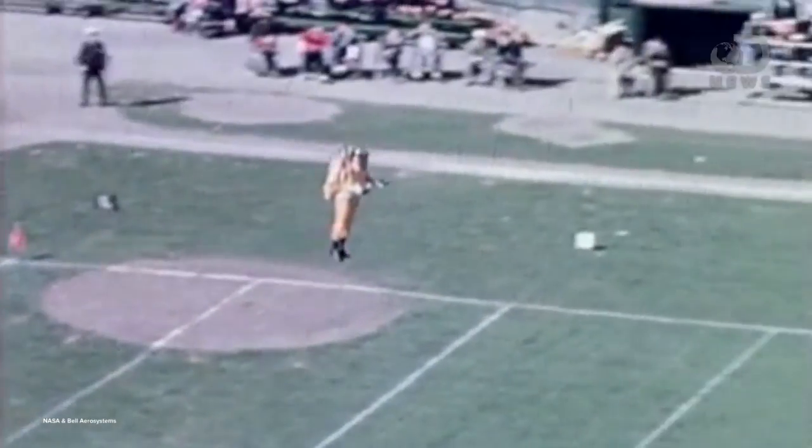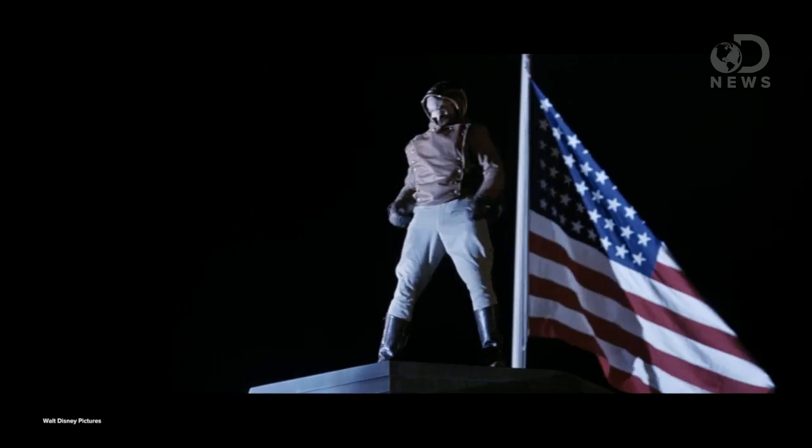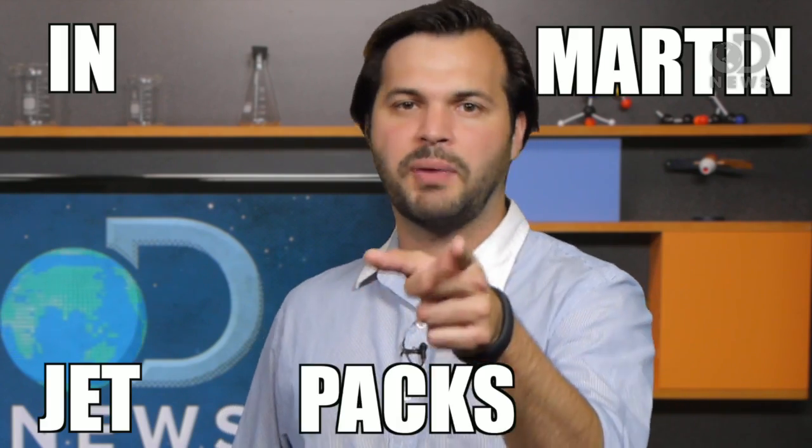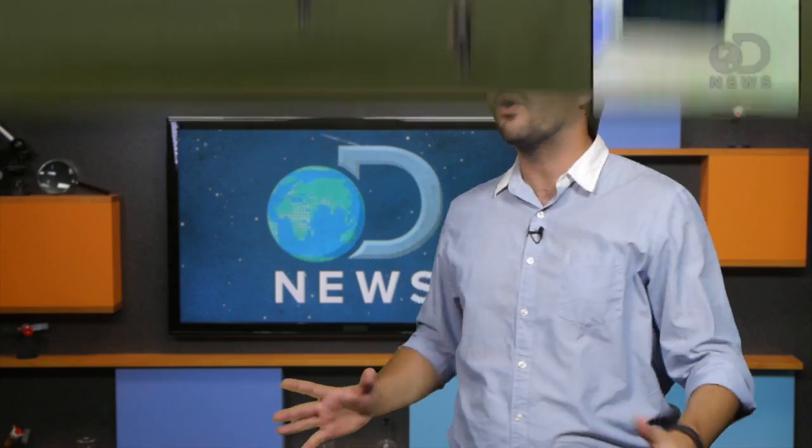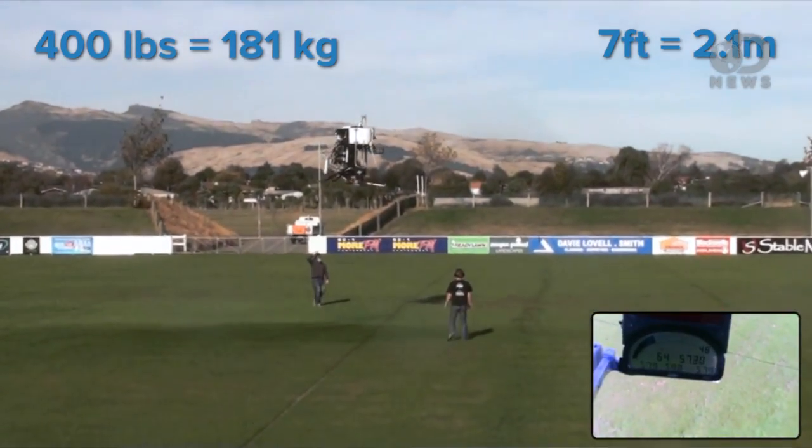The days where we'll get jetpacks like in The Rocketeer are a long way off. Back in 2008, Glenn Martin told the New York Times that if people are waiting for a backpack-sized jetpack, they're not going to be flying one in their lifetime. In comparison, in Martin, jetpacks you! The P-12 is 400 pounds and 7 feet tall. It is gigantic.